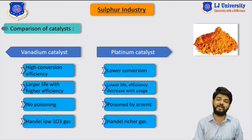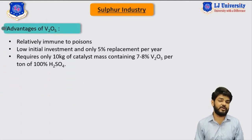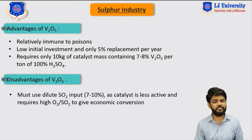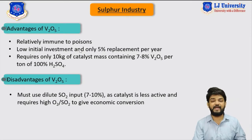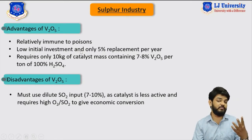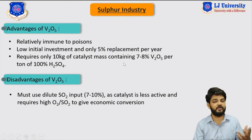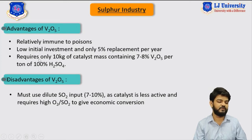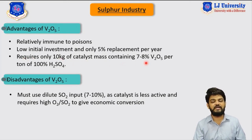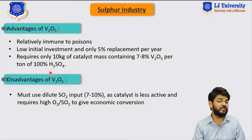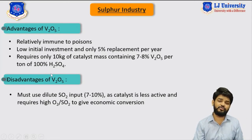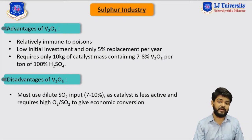Now let's discuss the advantages of vanadium pentoxide. As you can see on the screen, vanadium pentoxide is relatively immune to poisons and will not be affected by external materials. It requires low initial investment with only five percent replacement per year. Only 10 kg of catalyst mass — containing seven to eight percent vanadium pentoxide — is required per 100 percent of H2SO4 produced, so the required quantity is relatively very less.